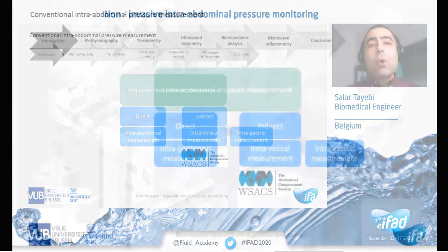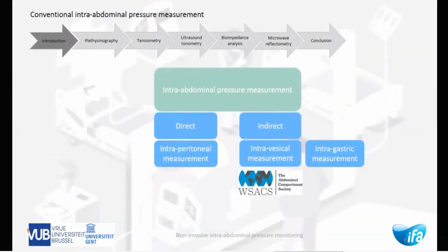As you already know, intraperitoneal, intravesical, and intragastric measurement techniques are the main conventional abdominal pressure measurement methods used for monitoring critically ill patients with a high risk of abdominal hypertension development. The intraperitoneal method is a direct measurement that carries a high risk of infection and bleeding, so it is not recommended except in emergency cases. Intragastric and intrabladder measurements are indirect methods more commonly used in intensive care units, based on the guidelines of the Abdominal Compartment Society.